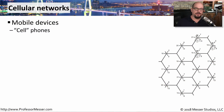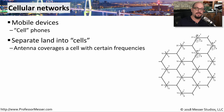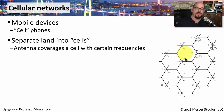We rely on cellular networks to provide most of our mobile communications these days. We use our mobile phones and mobile devices to communicate over these separate cells of communication. We have antennas that can converge the data within these cells so that you can move from cell to cell and still maintain communication wherever you happen to be.